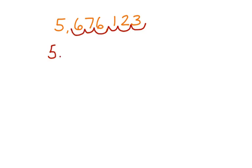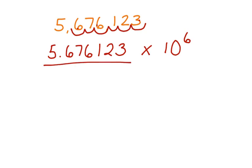And we end up with 5.676123 times 10 to the 6th. Now, you could also round this number. We could round up to the tenths place. We could round to 5.7 times 10 to the 6th. And that would work as well.